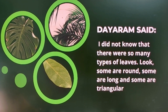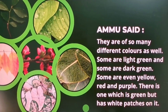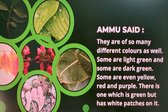Dayaram said, 'I did not know that there were so many types of leaves! Look — some are round, some are long, and some are triangular.' Amu said they are of so many different colors as well — some are light green, some are dark green, some are even yellow, red, or purple, and there is one which is green but has white patches on it.